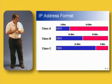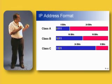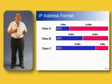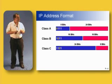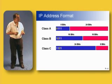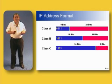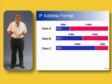Let's follow that along for a class C. We can't put a zero in the first bit position because that means class A, and we can't put a zero in the second bit position because that would mean class B. So we have to put the zero in the third bit position. If the first three bits are set to one-one-zero, that means it's a class C address: 24 bits network, 8 bits host.